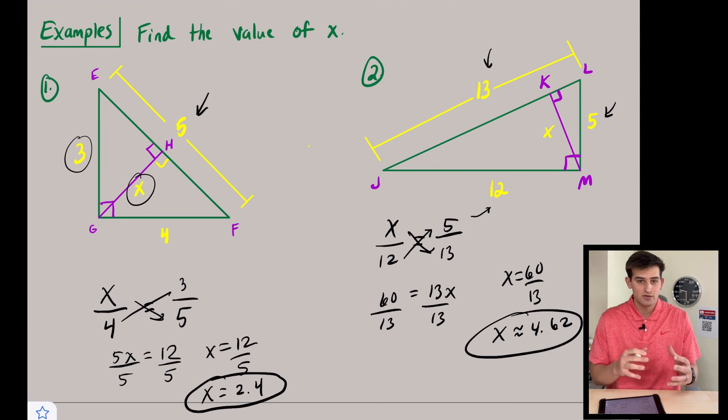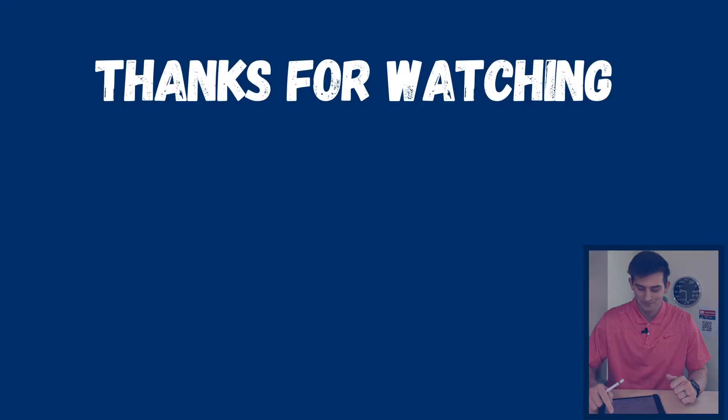And so that is how you work with similar right triangles when the altitude is drawn to the hypotenuse of the right triangle.